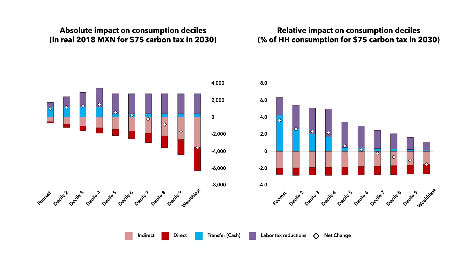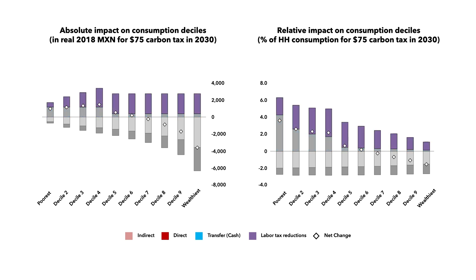Here's another example of incidence analysis we did for Mexico for a $75 carbon tax in 2030. The red bars indicate burdens from carbon pricing in terms of direct impacts on energy prices and the indirect impacts on non-energy goods. These are broadly distribution neutral and average about 3% of household consumption. The blue bars indicate benefits when 25% of carbon pricing revenues fund targeted assistance for the bottom four deciles, and the purple bars indicate benefits when the remaining 75% funds a general reduction in labour income taxes.